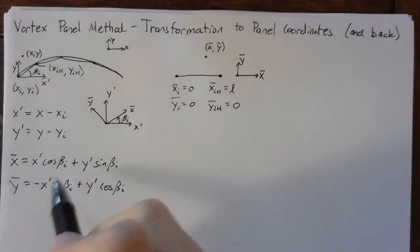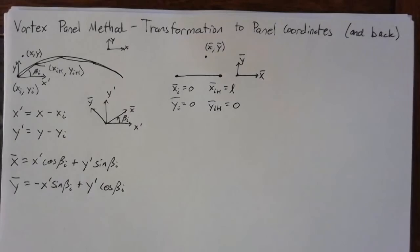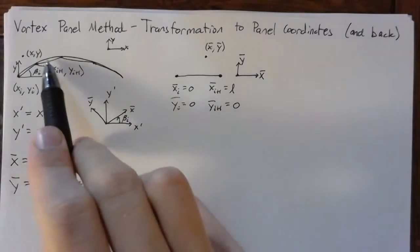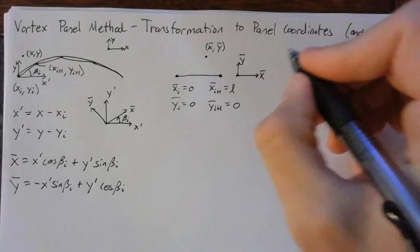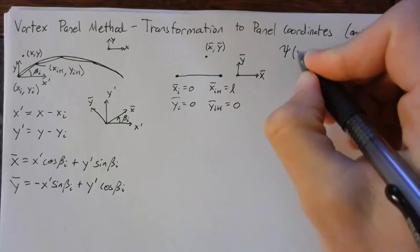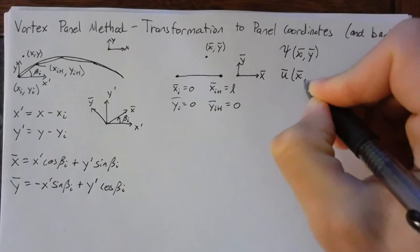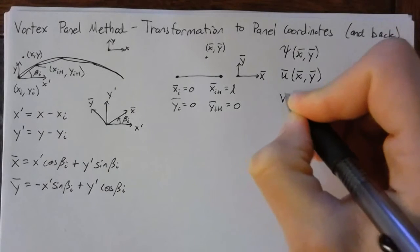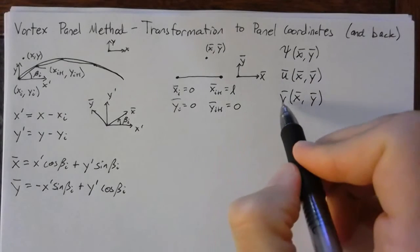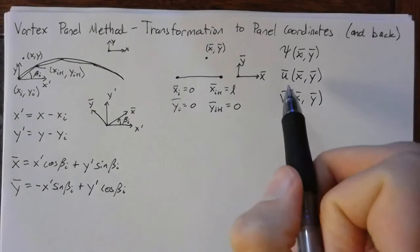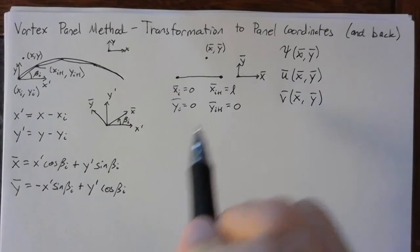That's everything we need to do in order to get this generic point x and y into the panel coordinates. We'll have to do this separately for each panel, and each panel will have its own coordinate system. But once you have it, you're able to find the stream function as a function of x-bar and y-bar, and also u-bar in terms of x-bar and y-bar, and v-bar in terms of x-bar and y-bar. Here psi is our stream function, and u-bar and v-bar are simply the components of the velocity in the x-bar and y-bar directions.